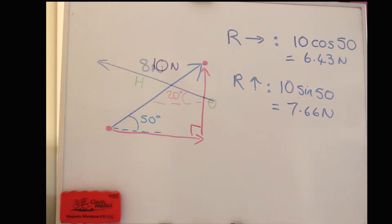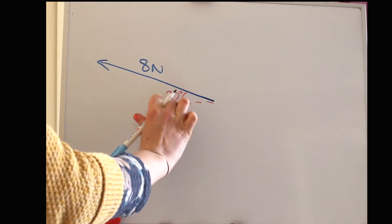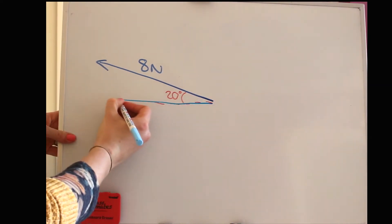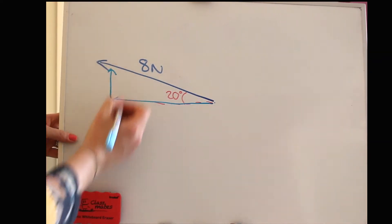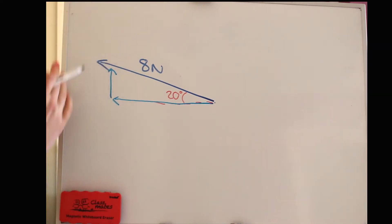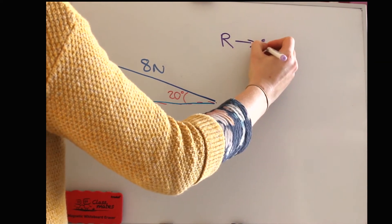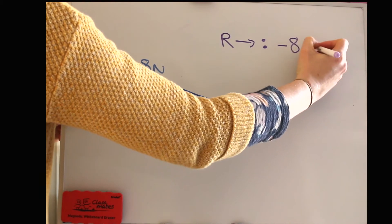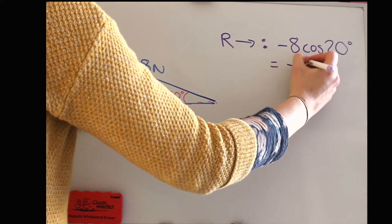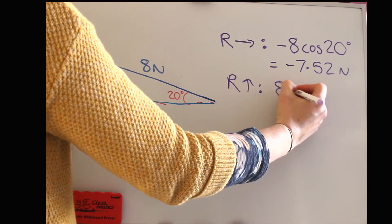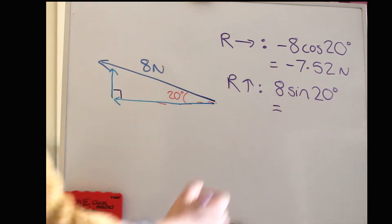Let's practice another one. Here we've got another force — it's 8 newtons acting at 20 degrees to the horizontal. We're going to practice resolving the vector to find the horizontal and vertical components. Drawing the right-angle triangle from start to end, the arrows go that way, so straight away the horizontal component is negative because it's going to the left and the vertical component is positive. Resolving horizontally: it's negative and we use cos, so it's negative 8 times cos of 20, giving 7.52. Resolving vertically: it's positive, using sine for the opposite side, giving 2.74.